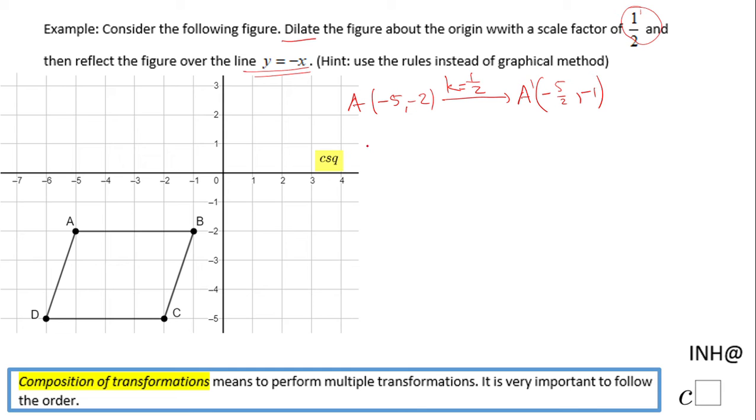We're going to do the same for the other points. Point B, which is negative one and negative two, becomes under the same dilation of scale factor of one-half, B prime, which is going to be negative one-half and negative one.